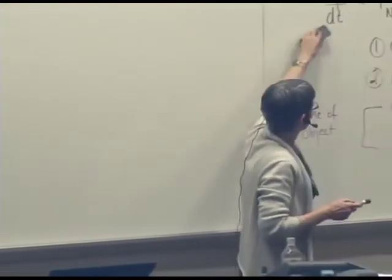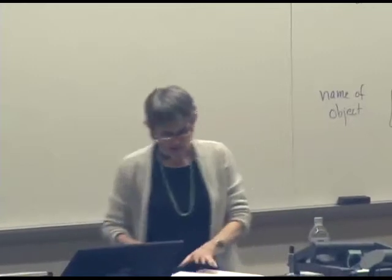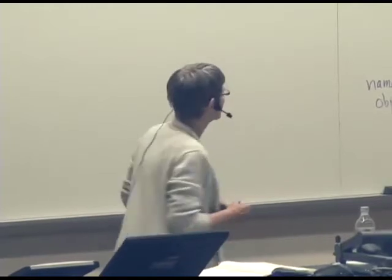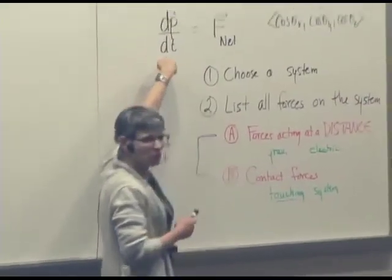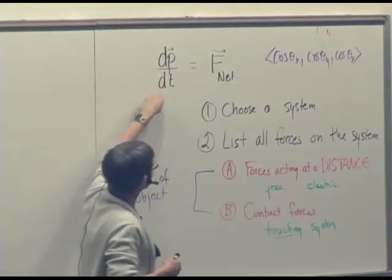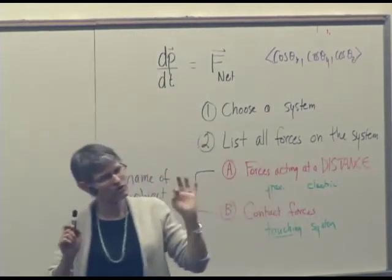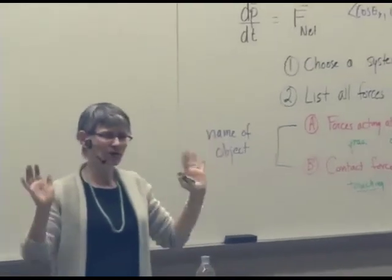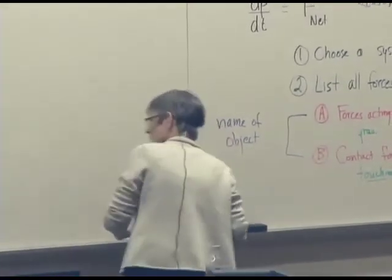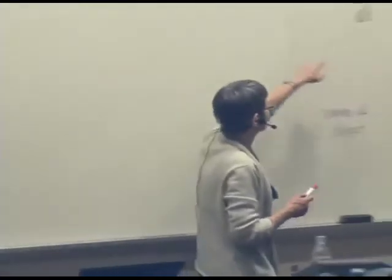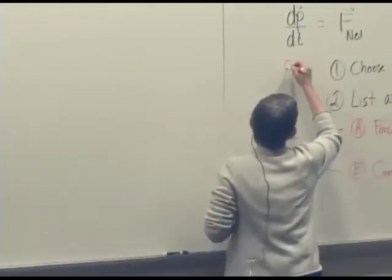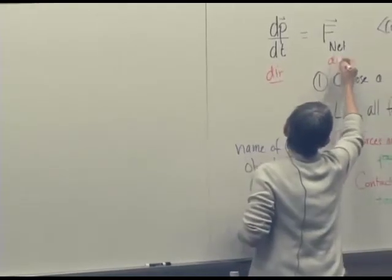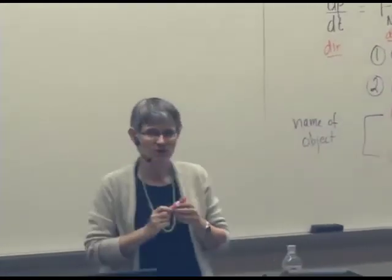Now the more interesting thing is when something's actually moving and momentum is changing, what do we do? We're still going to do all this stuff, but now we need to worry about this side too. Because if momentum's changing, at the instant we choose, we have to say what dp/dt is. And because it's a vector, there's two pieces to it: magnitude and direction. If we can get the direction of dp/dt, then we've got the direction of F_net, because those two vectors have to have the same direction if they're equal to each other.